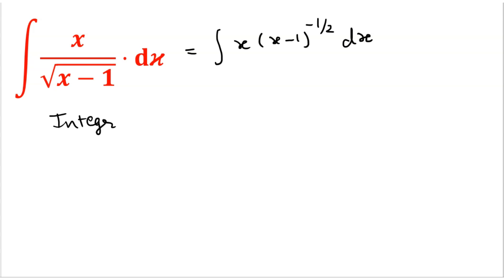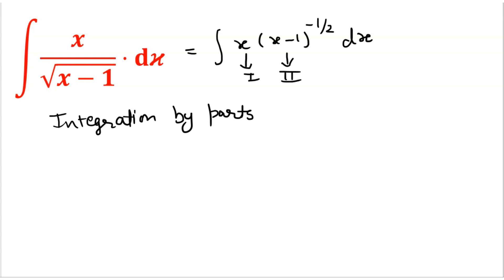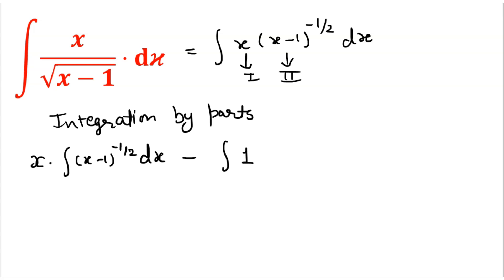We make x as the first function and x minus 1 raised to power minus 1 by 2 as the second function. By the integration by parts rule: first function is as it is, multiplied by the integration of the second function, minus the integration of the differentiation of the first function — which is 1 — times the integration of the second function.